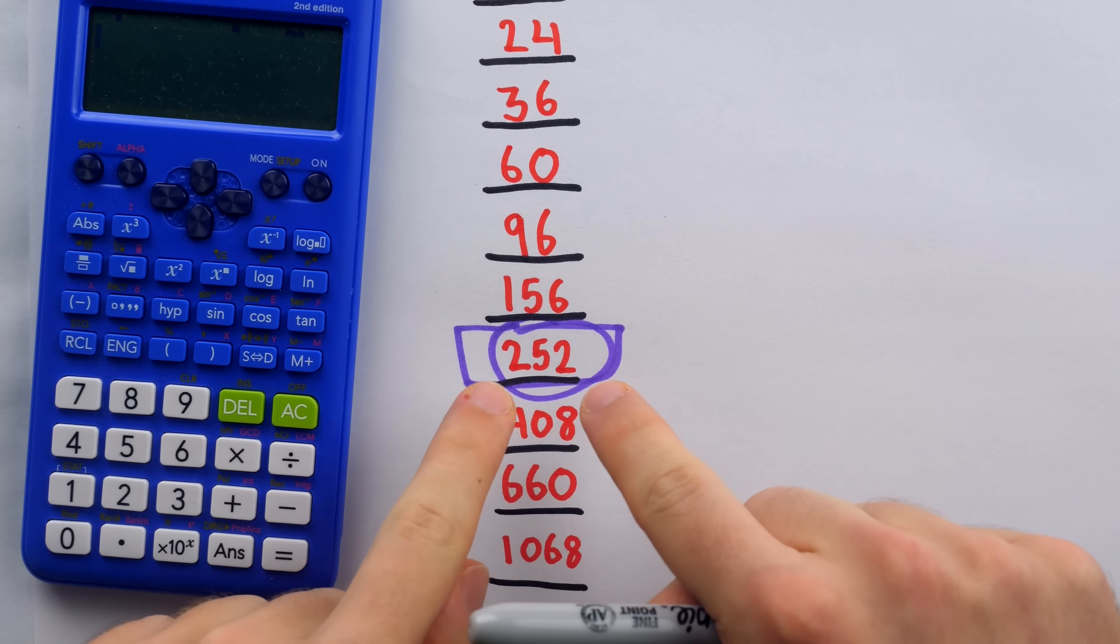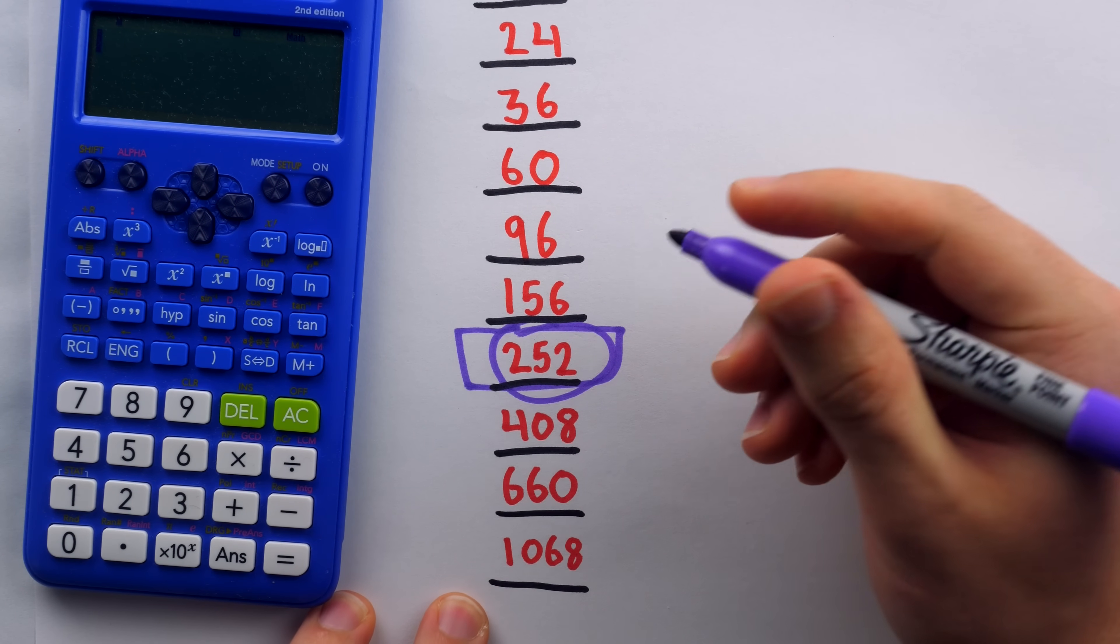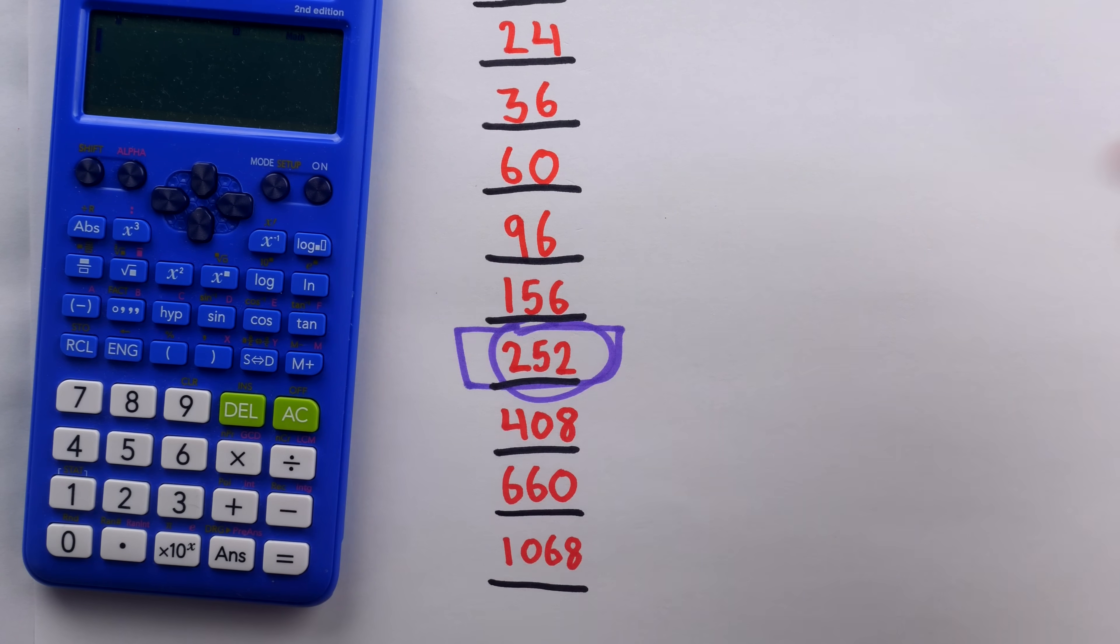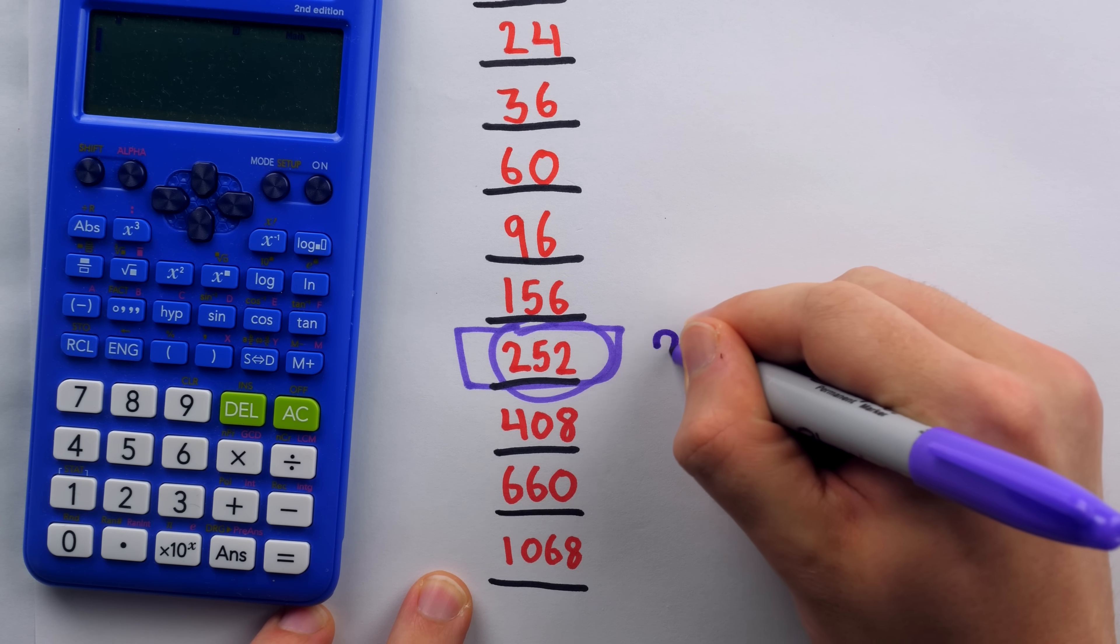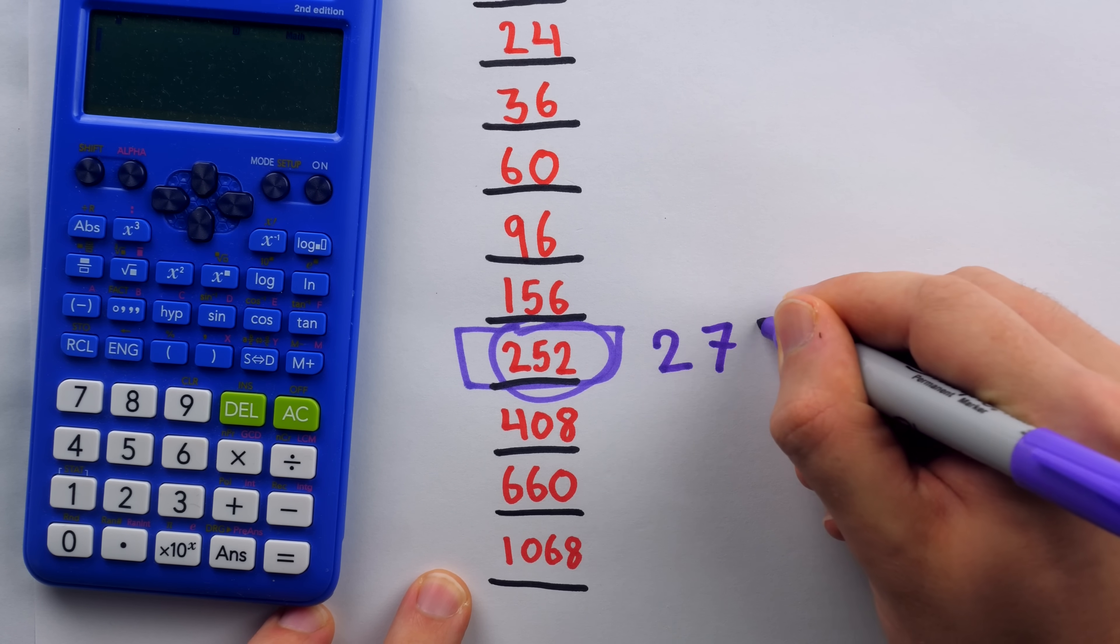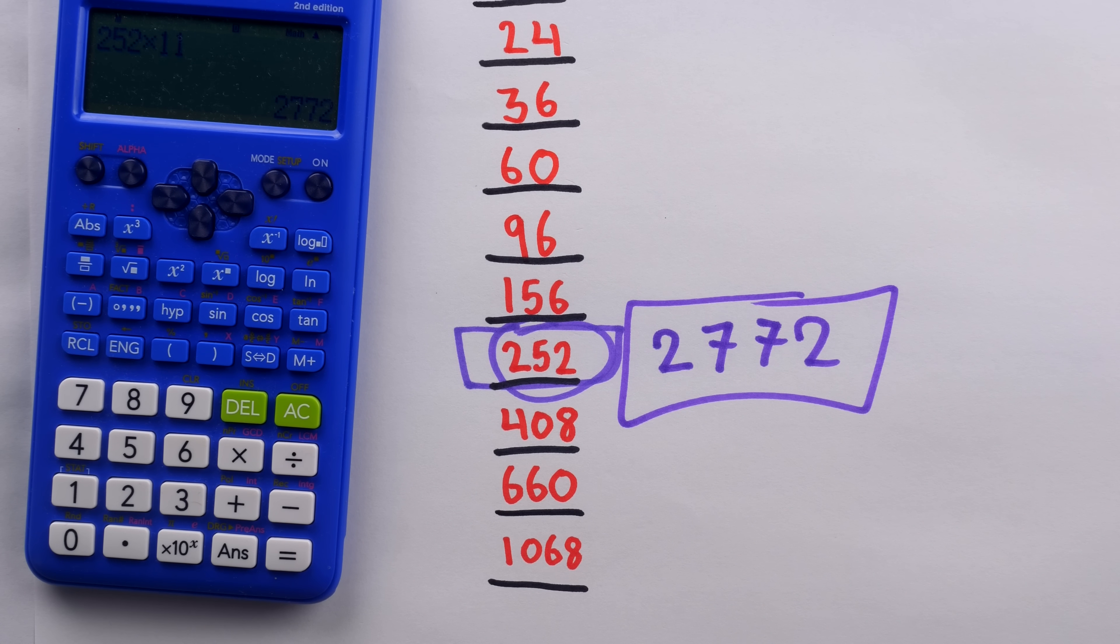All you have to do with the seventh number is multiply it by 11. And multiplying by 11 is so easy. So as soon as I see that number, I'm turning around. And pretty much instantly, I'm going to announce that the answer is 2,772. And the crowd goes wild. And we can check that here. 252 times 11 is 2,772.